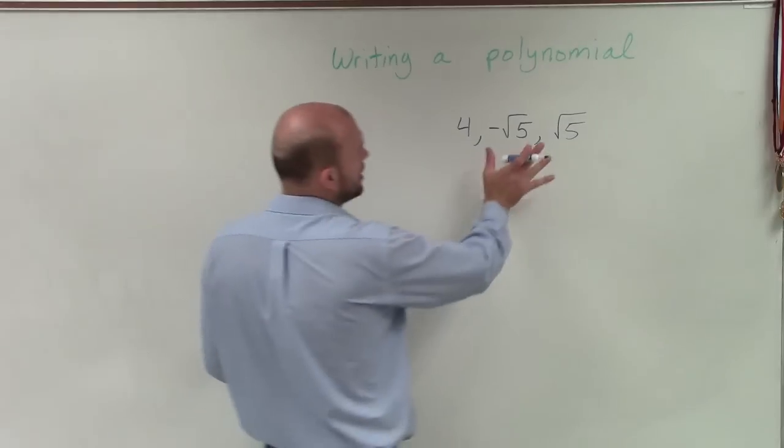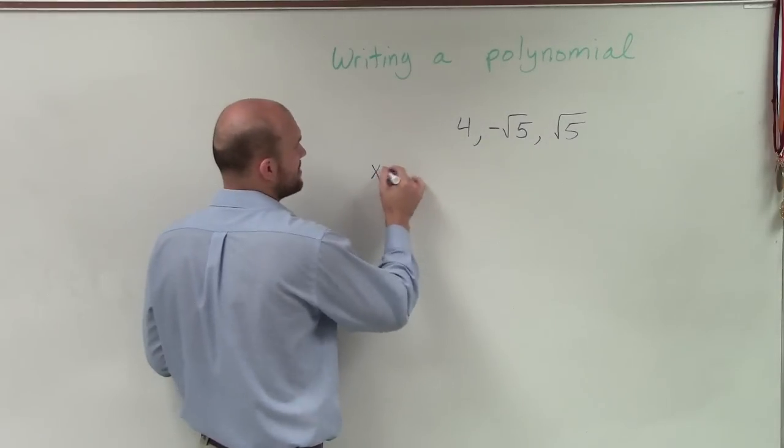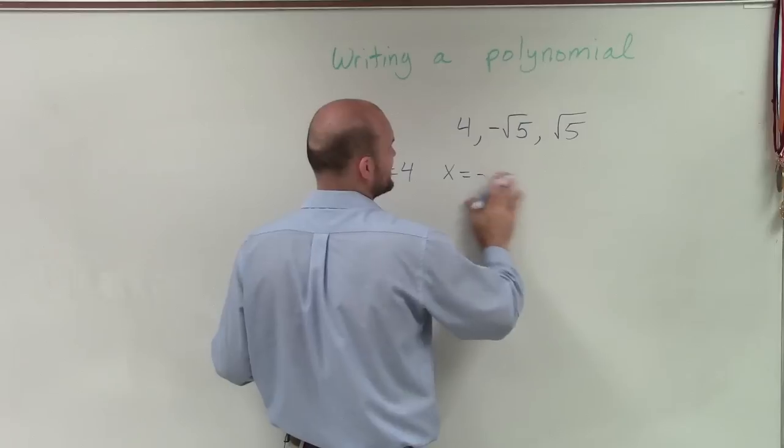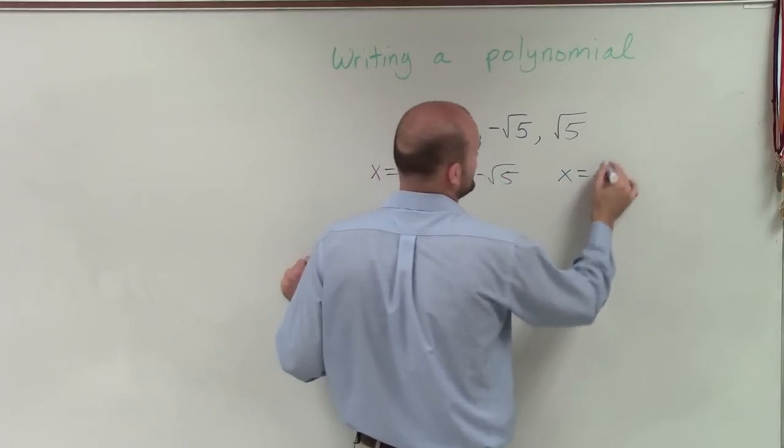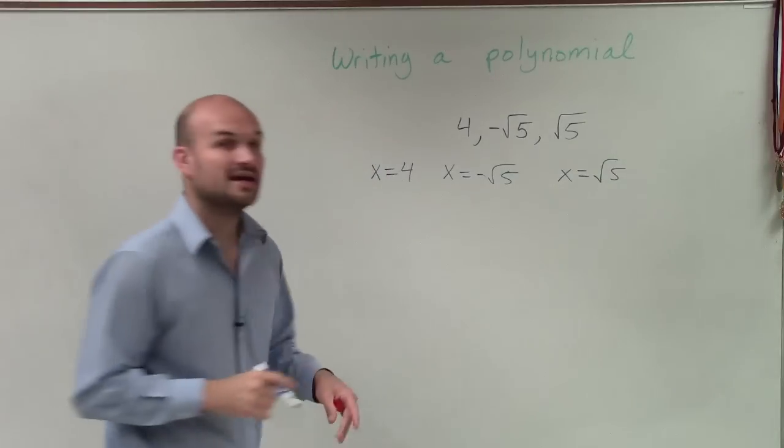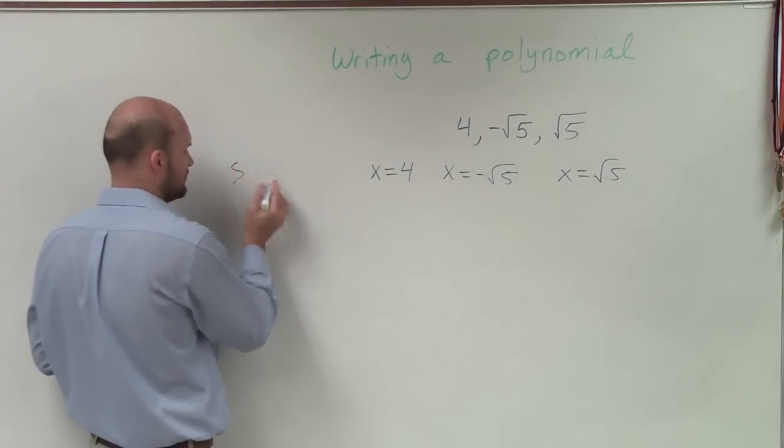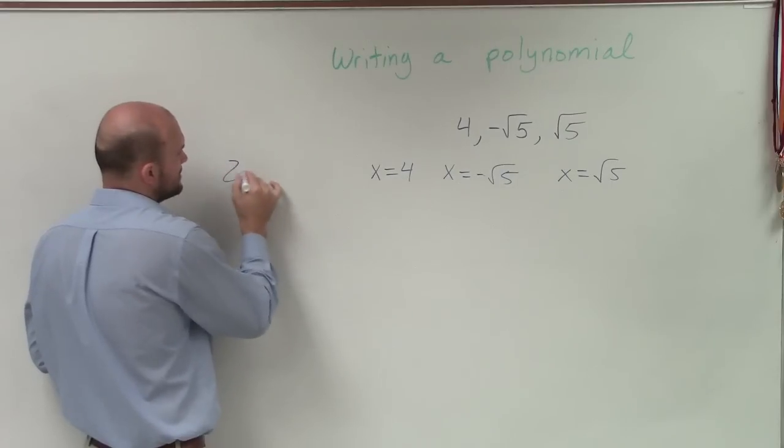Now, again, when writing our polynomial, these are the zeros. So I can write them as x equals 4, x equals negative square root of 5, and x equals square root of 5. Then, going from zeros, so these are what we call our zeros.